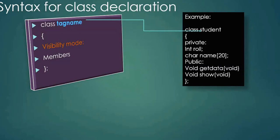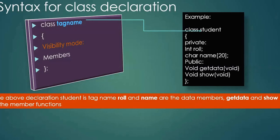For example, here I declared a class 'student', so the tag name for this class is 'student'. Under the visibility mode, I declare private visibility for 'role' and 'name', and public visibility for 'get_data' and 'show', which are the functions. So 'student' is the tag name, 'role' and 'name' are the data members, and 'get_data' and 'show' are the member functions.